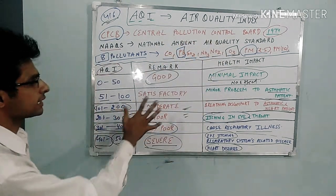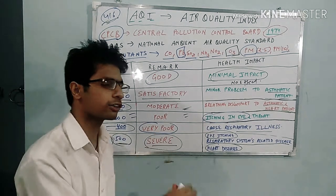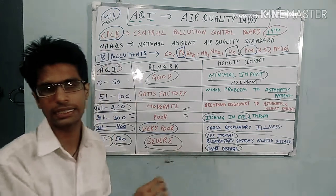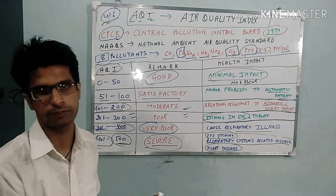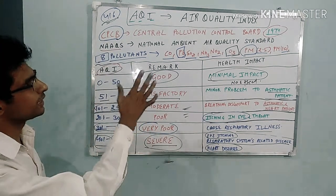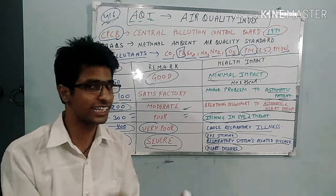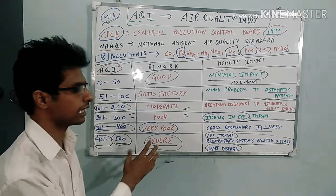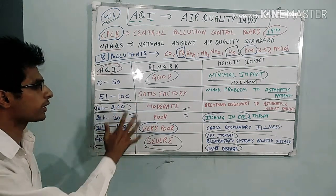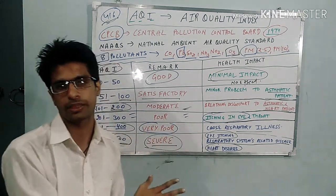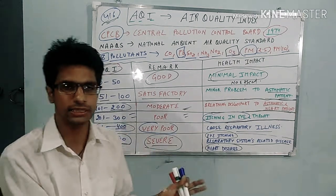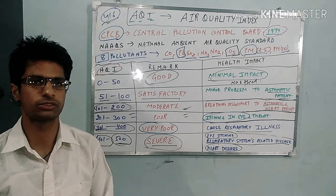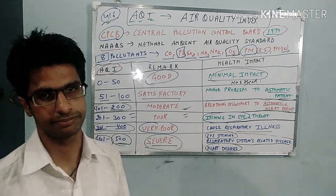It is the Central Pollution Control Board that compiles the AQI. I request you to spread awareness about this. This will also help you in the CSIR examination. Check your local AQI from the table; it will also help you memorize it for CSIR. Please subscribe to the channel. Thank you so much, and all the best for your CSIR examination.